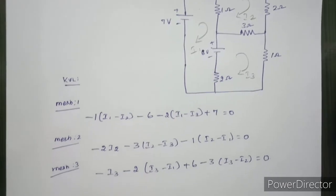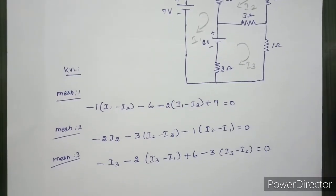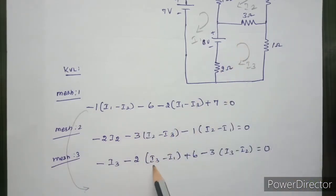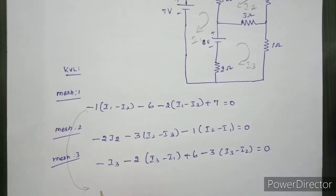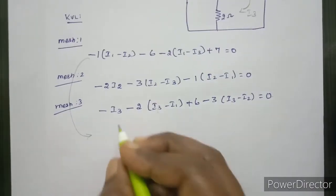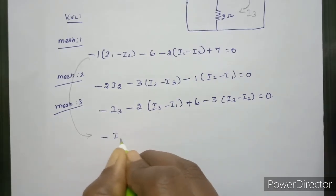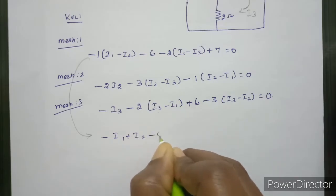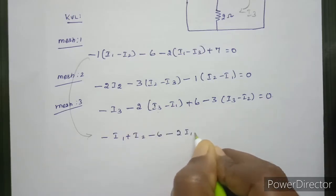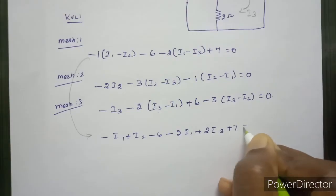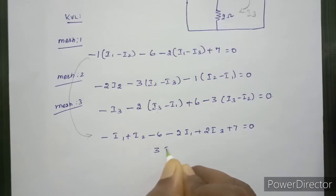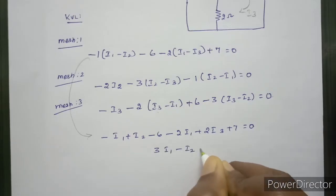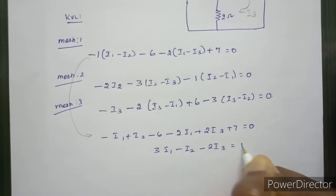So these 3 equations are very important. We will simplify them using the matrix formula. Simplifying the first equation: 3I1 minus I2 minus 2I3 equals 1. We also have 2I3 plus 7 equals 0, so we need to simplify all three equations.